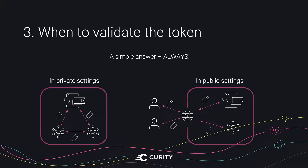When to validate the token: the rule of thumb is you should always validate an incoming JWT. It's obvious in public settings, but even if you have a private network where your clients, authorization server, and APIs are all internal, you should still maintain a high level of security. At some point you may want to move to a public domain, and experience shows it's easy to overlook that the threat model has changed. If you have those solutions in place from the beginning, it's not a problem. Validating the token in all situations can also help in case someone breaks into your network, or a malicious actor in your organization forges tokens to gain access to resources.